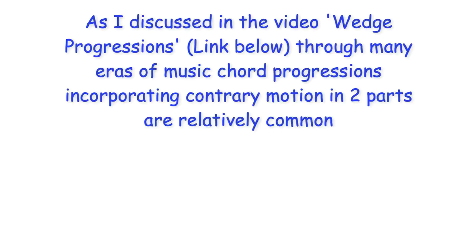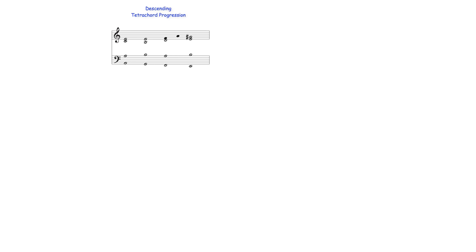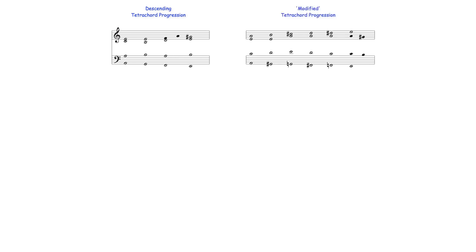As I discussed in the video on wedge progressions, throughout many eras of music, chord progressions incorporating contrary motion in two parts are relatively common. Often the prolongation of a single harmony may be heard as the basis of these progression types. Derived from the standard descending tetrachord progression, this modified progression, like the standard one, prolongs dominant harmony. Both progressions use voice exchange between the key's fifth and seventh degrees, which in the standard progression involves the lowered and raised seventh — part of minor and major dominant harmony — while the modified progression uses only the major dominant.